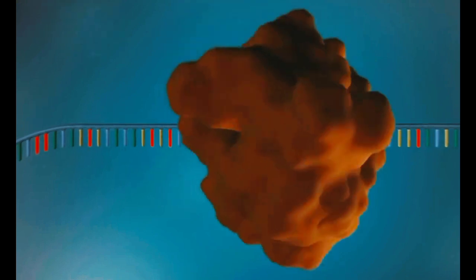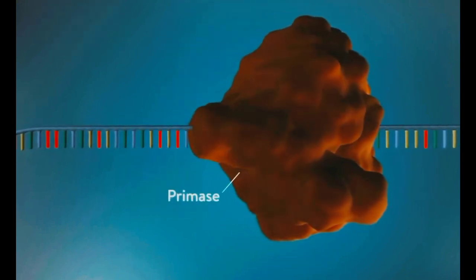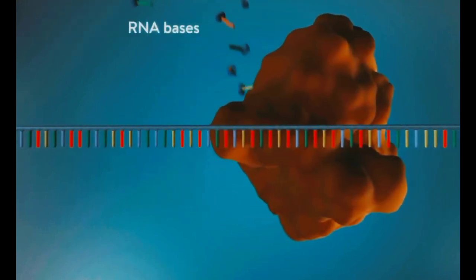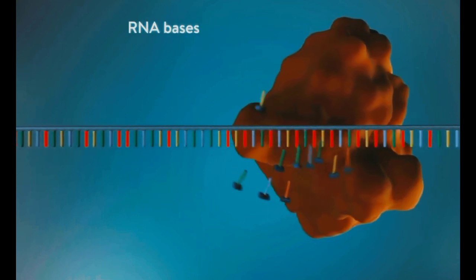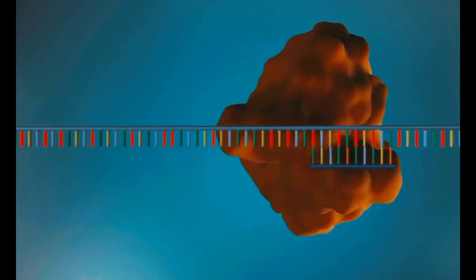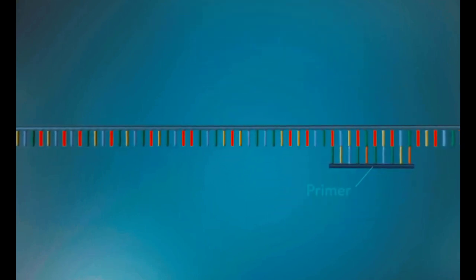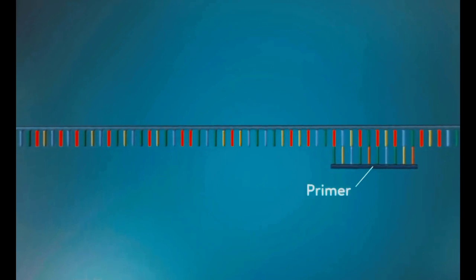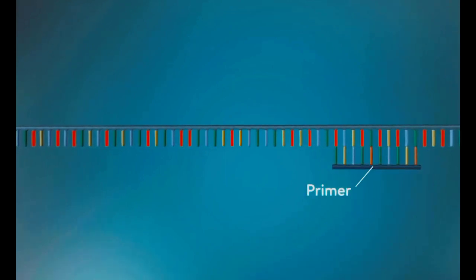An enzyme called primase starts the process. This enzyme makes a small piece of RNA called a primer. This marks the starting point for the construction of the new strand of DNA.